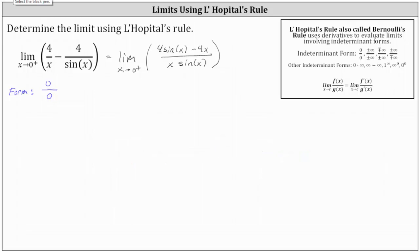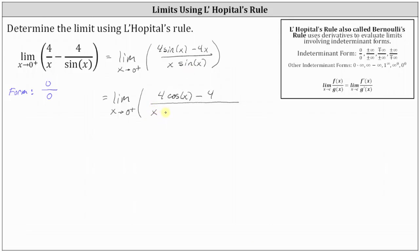Applying L'Hôpital's rule, this limit is equal to the limit as x approaches 0 from the right of the derivative of 4 sine x minus 4x, divided by the derivative of x sine x. The derivative of 4 sine x is 4 cosine x, minus the derivative of 4x, which is 4. For the denominator, we apply the product rule: the first function x times the derivative of sine x, which gives cosine x, plus the second function sine x times the derivative of x, which is 1.